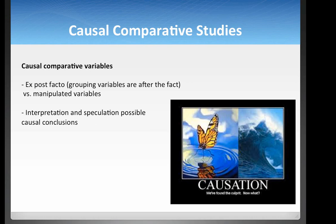This is different from an experimental design, where we would take a group of people and randomly assign some to having dogs and others to not having dogs, and then look at the life expectancy. That would be experimental.